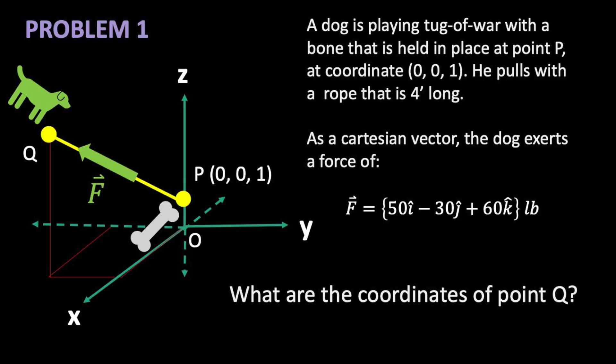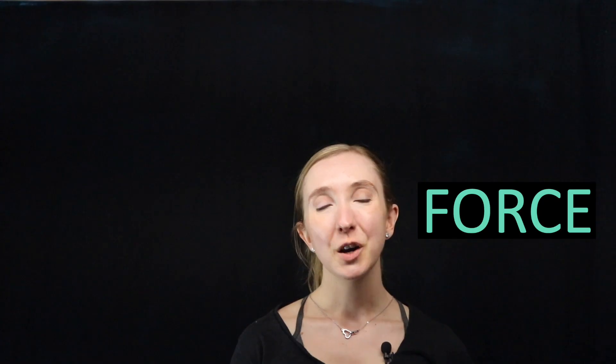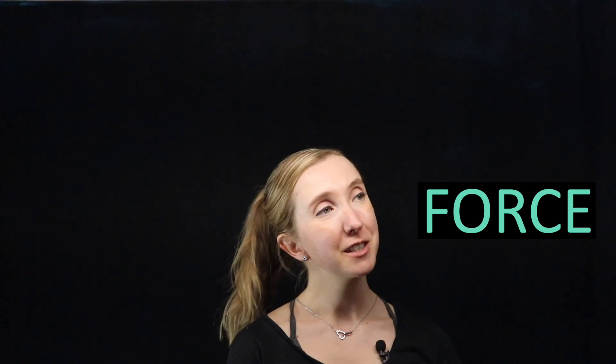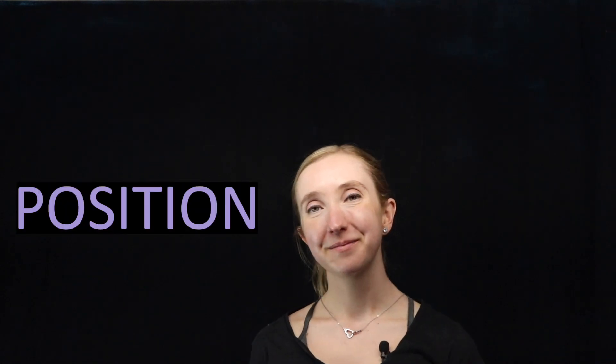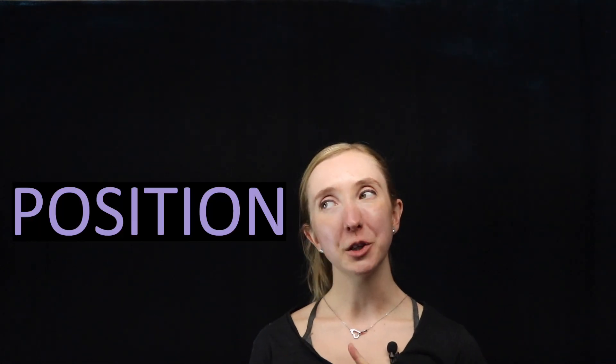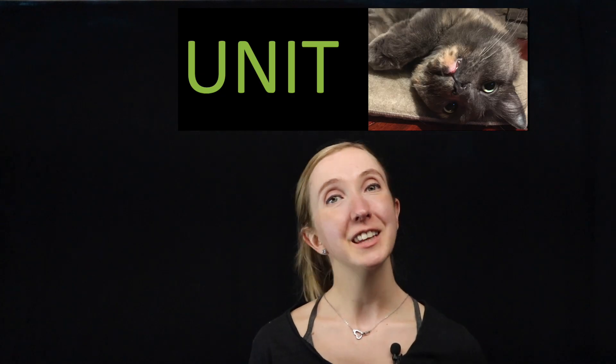A dog is playing tug-of-war with a bone that is held in place at point P at coordinate 0,0,1. He pulls with a rope that is 4 feet long. As a Cartesian vector, the dog exerts a force of 50 pounds in the x direction, 30 pounds in the negative y direction, and 60 pounds in the positive z direction. What are the coordinates of point Q at the other end of the rope? We want to go from a force vector to a position vector. How do we go between the two? We use their common unit vector.